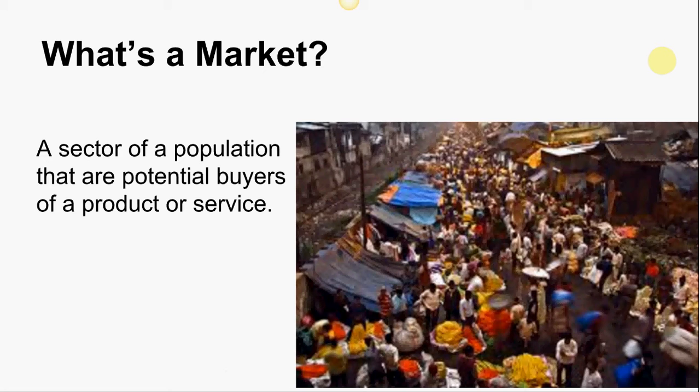Here is the classic definition: a market is a sector of a population that are potential buyers of a product or service. A market can be a geographical market — people living in a certain country — or it can constitute people with a certain kind of background, a professional background, or it could be an age group. It's a way of grouping people who are potential buyers of your product or service.